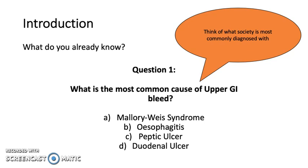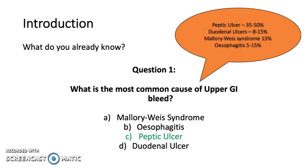Let's start off with what you already know. Question 1: What is the most common cause of an upper GI bleed? Is it A. Mallory-Weiss syndrome, B. esophagitis, C. peptic ulcer, or D. duodenal ulcer? The answer is C, peptic ulcer.